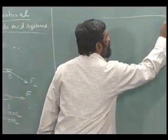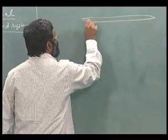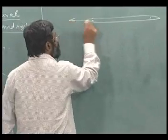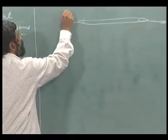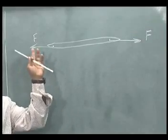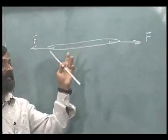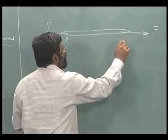Supposing I take this particular member which is a link member and I already know that the force acting on this can be reduced simply as equal and opposite forces acting at A and B like this.